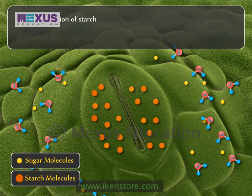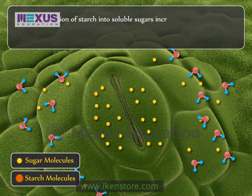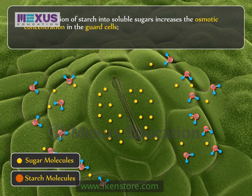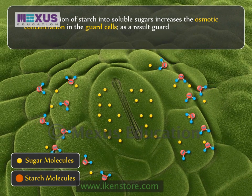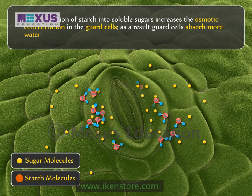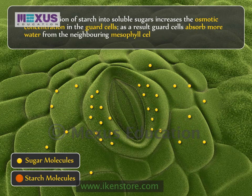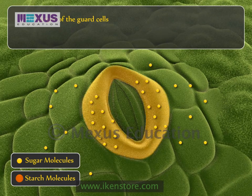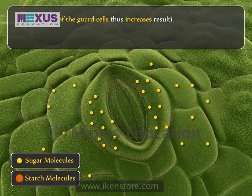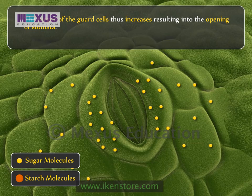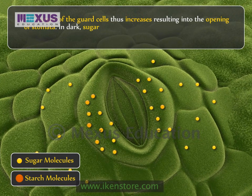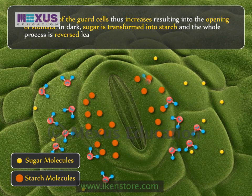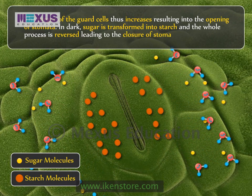The conversion of starch into soluble sugars increases the osmotic concentration in the guard cells. As a result, guard cells absorb more water from the neighbouring mesophyll cells. The turgor of the guard cells thus increases, resulting in the opening of the stomata. In the dark, sugar is transformed into starch and the whole process is reversed, leading to the closure of the stomata.